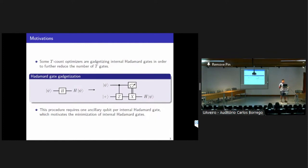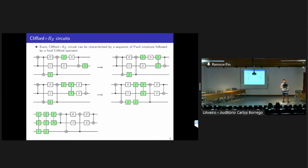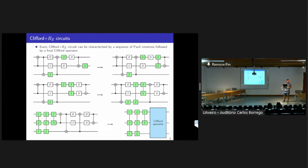A third question asked whether ZX calculus would be useful for calculations in this paper. The speaker acknowledged that parity rotations can be written in ZX calculus, and that if all rotations are diagonal it means only Z spiders appear in the boxes, giving a nice simple representation. However, it is just a different representation — not inherently better or worse for this work.